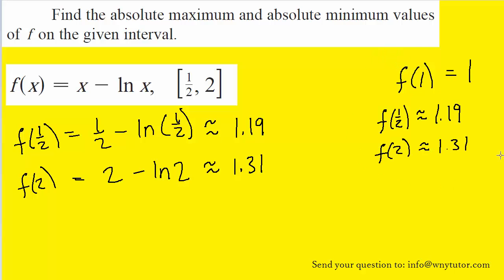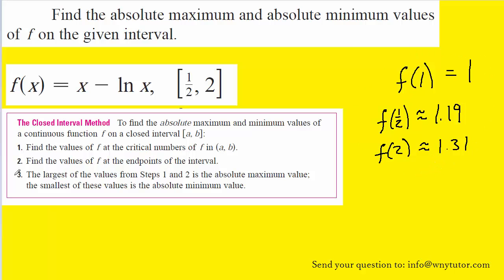So here on the side are the results. Let's look at step 3 of the closed interval method. In step 3, we are told that the largest of the values from steps 1 and 2 is the absolute maximum value. And then the smallest of the values is the absolute minimum.